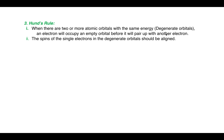In the second part: the spins of the single electrons in the degenerate orbitals must be aligned. That is, if electrons are present singly in orbitals of the same energy — the degenerate orbitals — their spins must be the same.